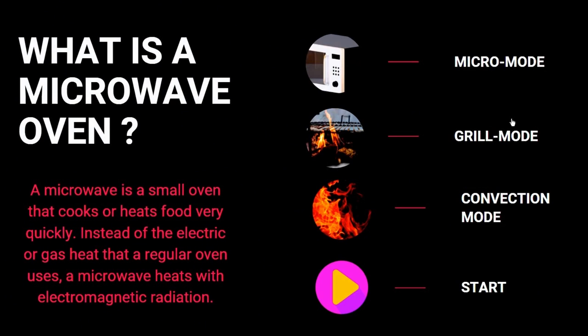A microwave oven is a small oven that cooks or heats food very quickly. Instead of electric or gas heat that a regular oven uses, a microwave oven heats with electromagnetic radiation. There are basically four modes available: the micro mode, the grill mode, the convection mode, and the start mode.